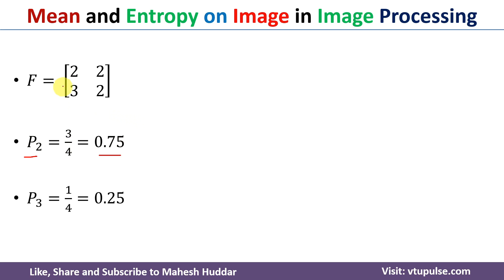Similarly, the probability of pixel value 3 is out of 4 pixels, 1 pixel has the value 3. So 1 out of 4, which is equivalent to 0.25.